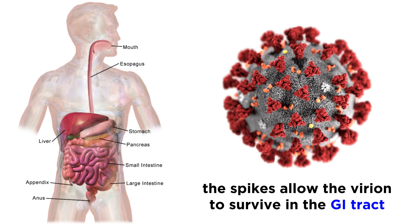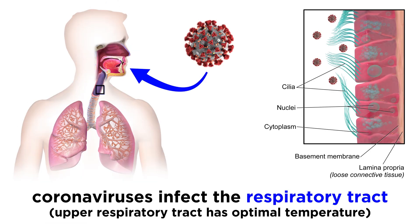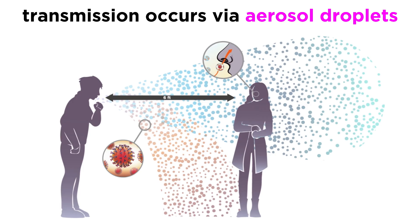The halo of spikes on the spherical surface of the virion gives the virus its ability to survive in places like the gastrointestinal tract. Coronaviruses typically infect epithelial cells in the respiratory tract, and they stay localized in the upper respiratory tract because it has the optimal temperature for viral growth. The virus is most likely spread by aerosols and large droplets, like from a sneeze, and causes colds very similar to that of rhinoviruses.